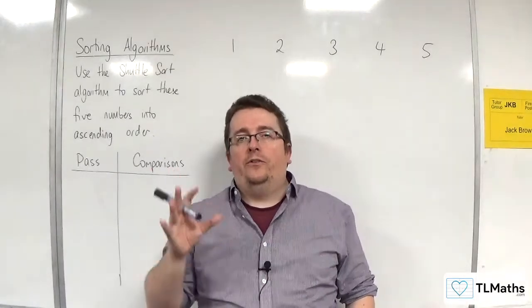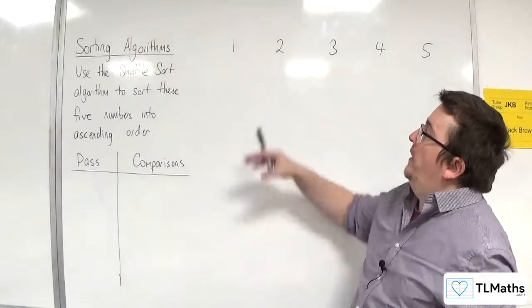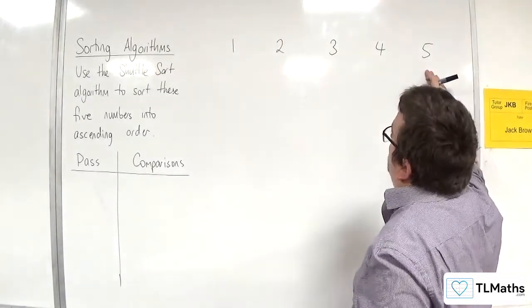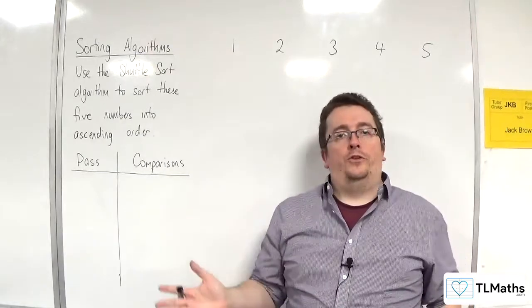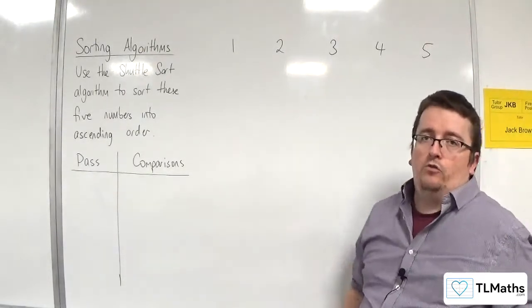In this video we're going to see how the shuttle sort fares in sorting 1, 2, 3, 4, 5 into ascending order. So a list that's already in ascending order - how good is the algorithm?